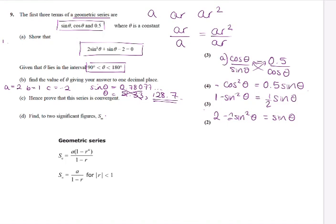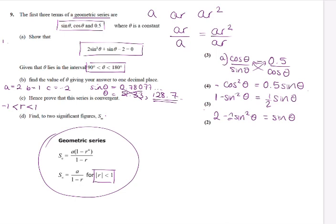Then it says prove that this series is convergent. So anything is convergent if your r is between minus 1 and 1 — essentially if it's a fraction, because everything gets smaller and smaller. That's what this means. So that's when we can use — this is by the way from your formula book — that's when we can find the sum to infinity, because something's getting smaller and smaller and smaller.